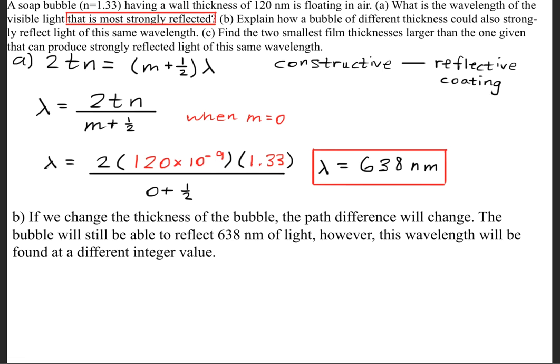Now, for part B, it says explain how a bubble of different thickness could also strongly reflect light of the same wavelength. So if we change the thickness of the bubble, the path difference will change. The bubble will still be able to reflect 638 nanometers of light. However, this wavelength will be found at a different integer value.